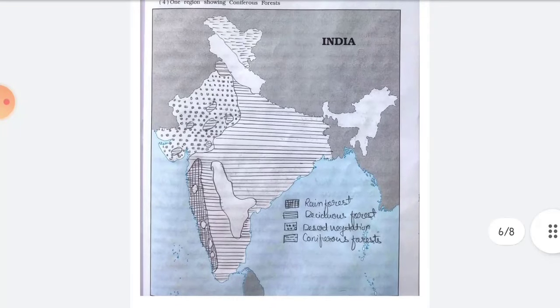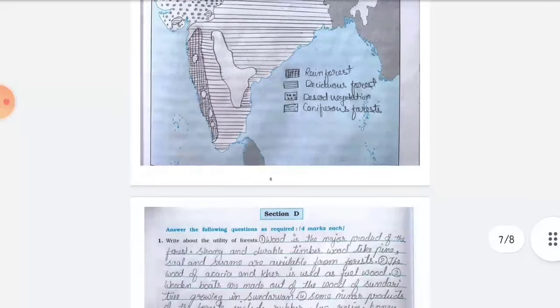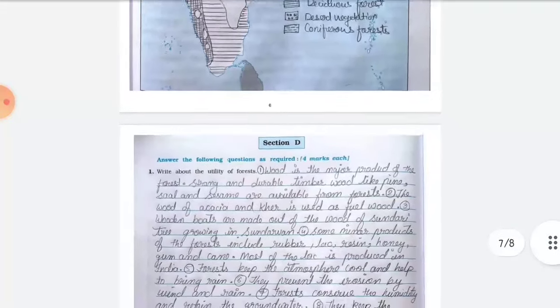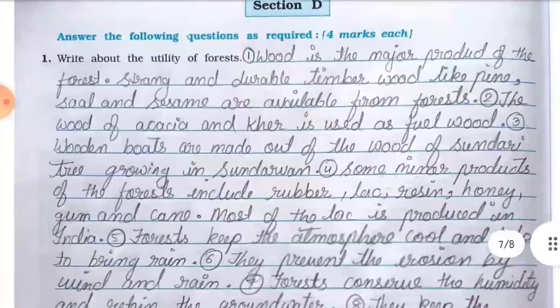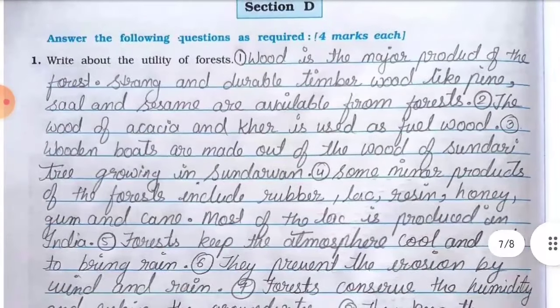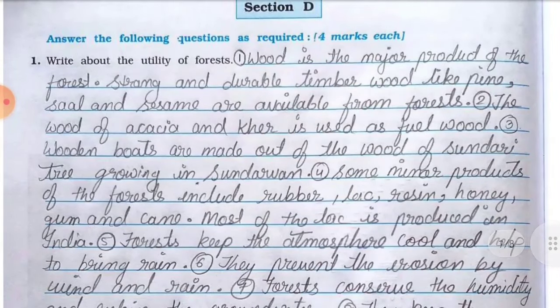Here you can see the whole solution of the map. Let's move to the next section — Section D: answer the following questions as required, four marks each. Number one, write about the utility of forests.